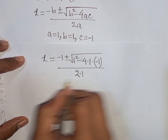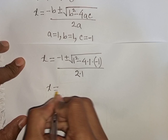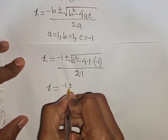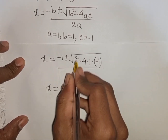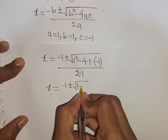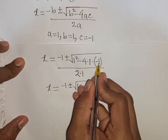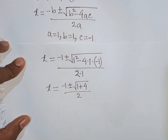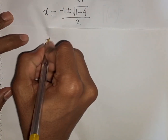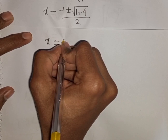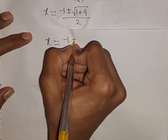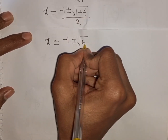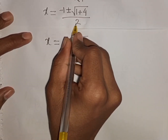So x equals minus 1 plus or minus square root of 1 plus 4, divided by 2. That gives x equals minus 1 plus or minus square root of 5, divided by 2.